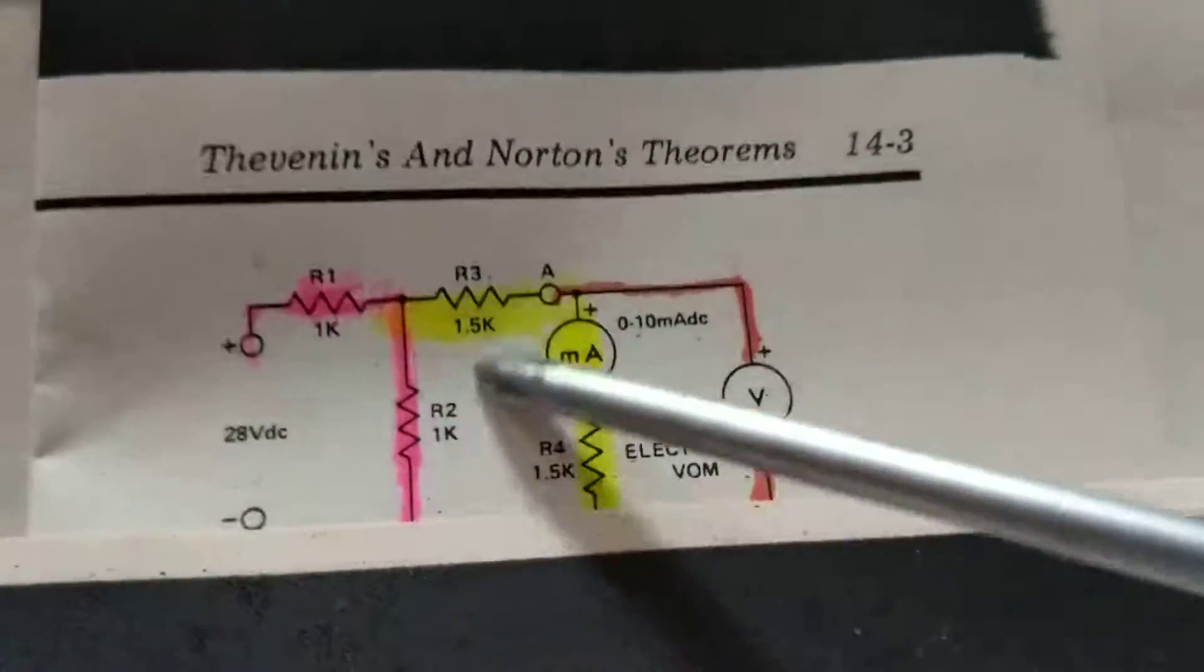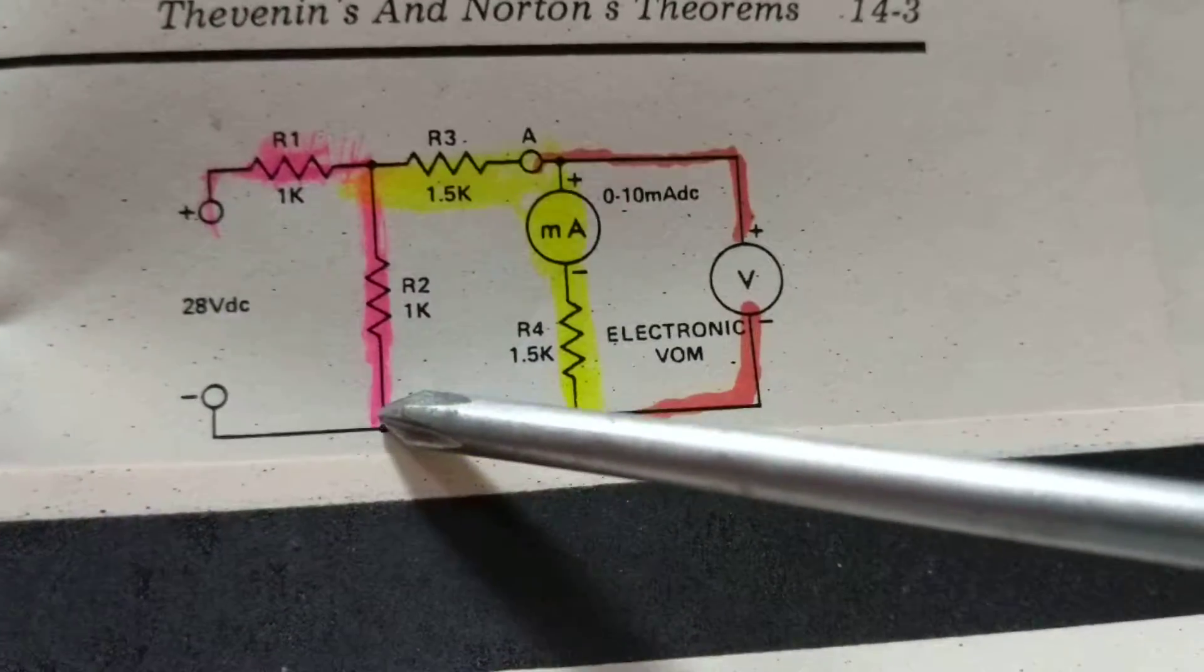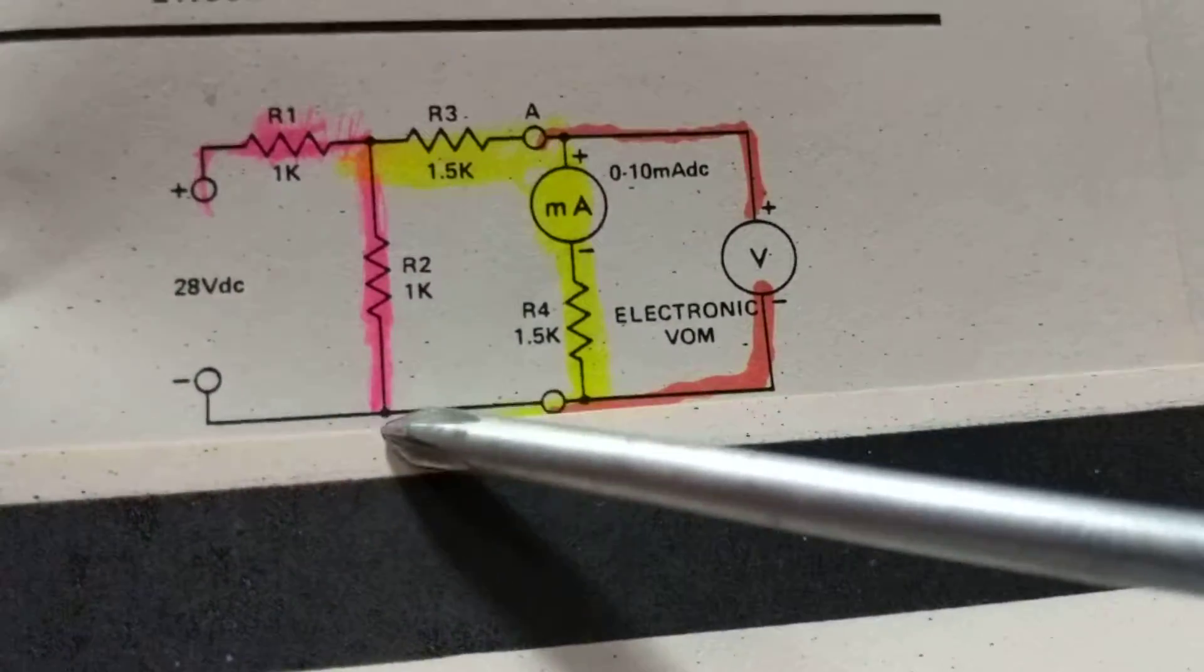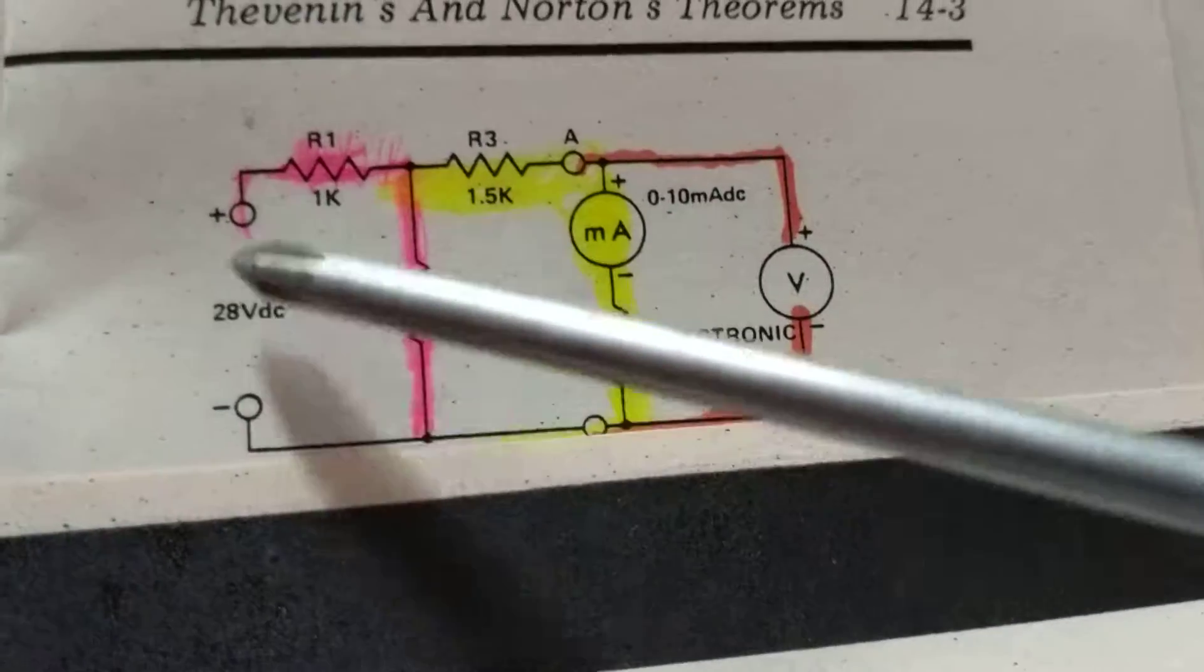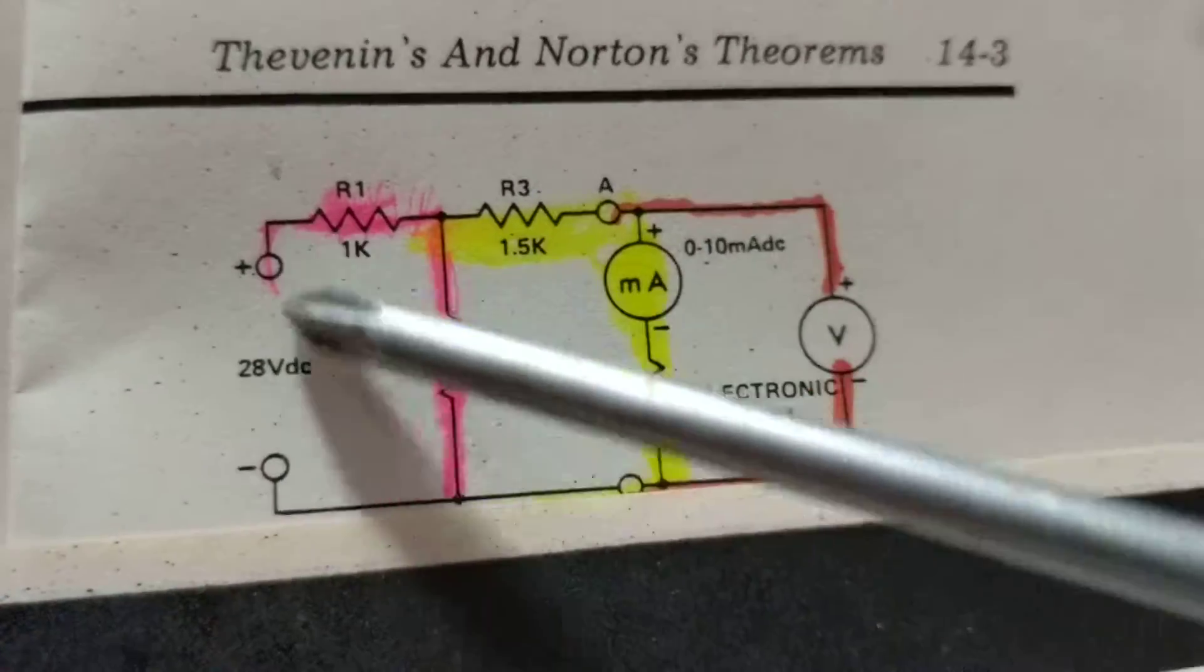We come back to this. We see this dot over here, that means there's a connection to this. It goes back to the negative of our power source.